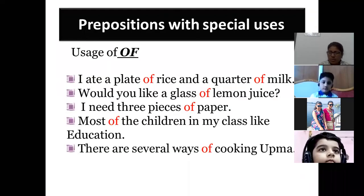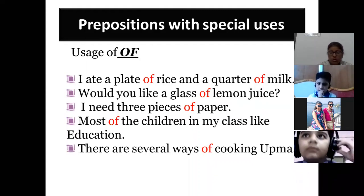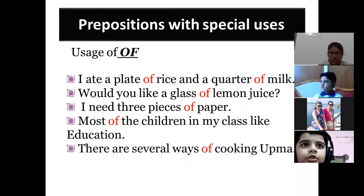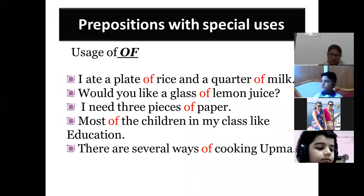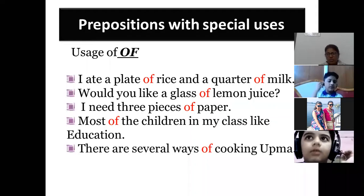Good morning everyone. Today we will study prepositions with special uses. When you want to use 'of', you can use it to indicate the source — for example, I need three pieces of paper, chairs are made of wood. You can also use it for illness: he died of hunger, he died of malaria. Another way is to show a relation — this is the leg of the table, showing the relation of the leg with the table.